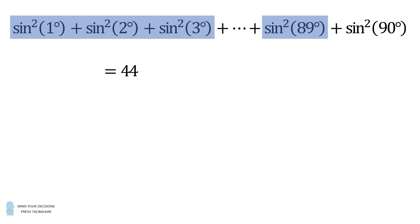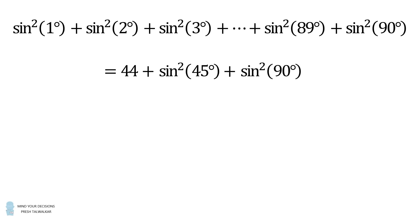But this entire sum has 90 terms. So there are two terms we still need to add. One is sine squared of 45 degrees, and the other is sine squared of 90 degrees.